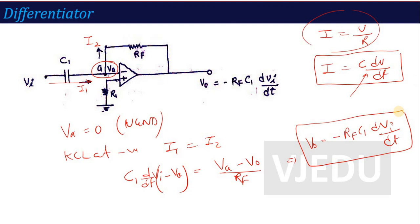In this differentiator output, the negative sign is because the input is at the inverting input. RF × C1 is the amplification factor, and dVi/dt is the differentiation of the input voltage. When asked to explain the differentiator circuit using op-amp or derive the output voltage of a differentiator using op-amp, draw the circuit, apply the two steps — virtual ground and KCL — to get the output voltage. In the similar way, you can create the next application: the integrator.